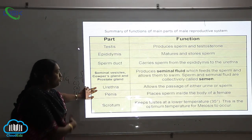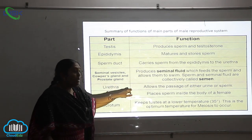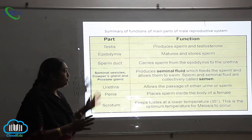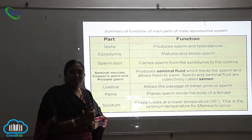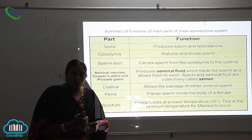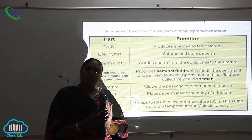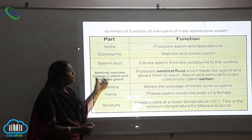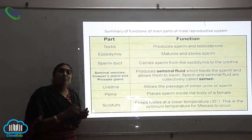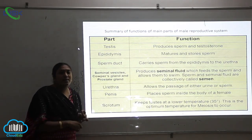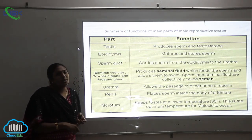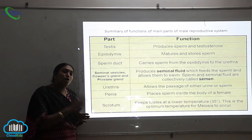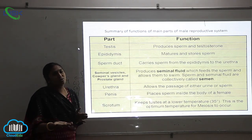Next is the urethra. What is the function of the urethra? It allows the passage of both urine and sperm. The urethra is that part of the male reproductive system which helps both in excretion and in reproduction — allowing both urine and sperms to pass through.